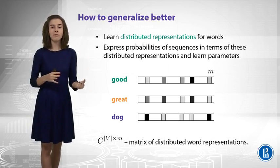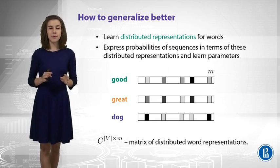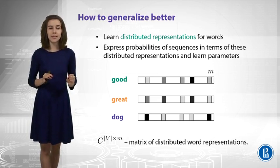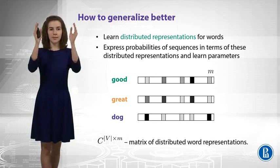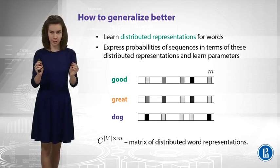For example, good and great will be similar, and dog will be not similar to them. I ask you to remember this notation in the bottom of the slide, so the C matrix will be built by these vector representations, and each row will correspond to some word.